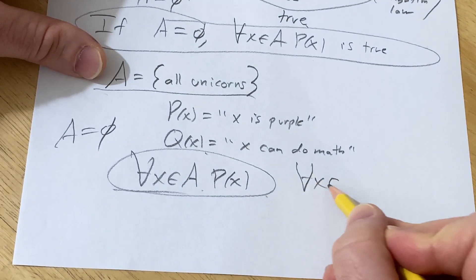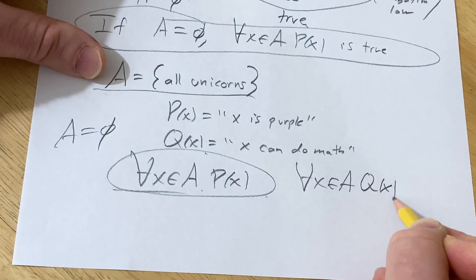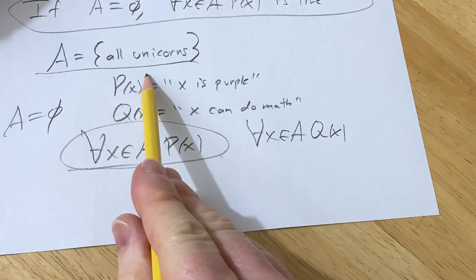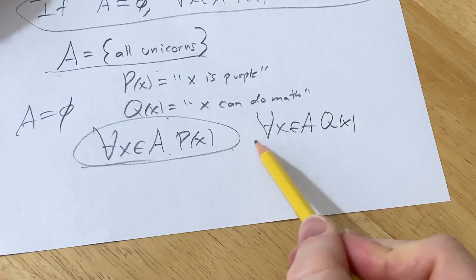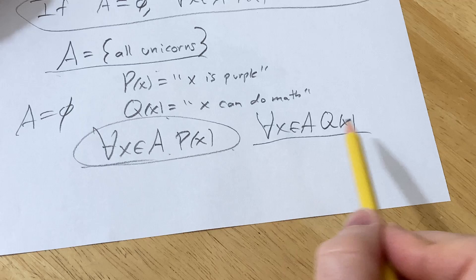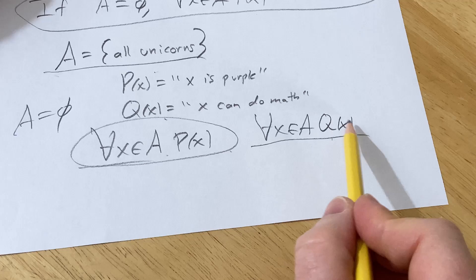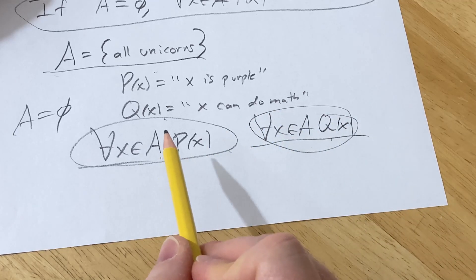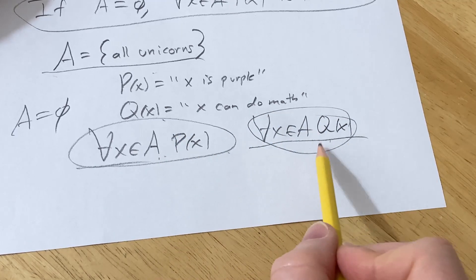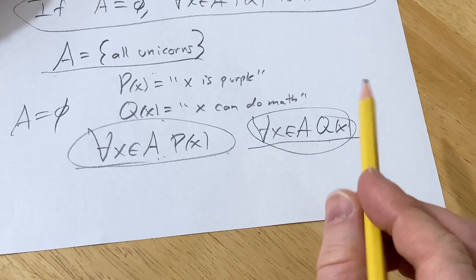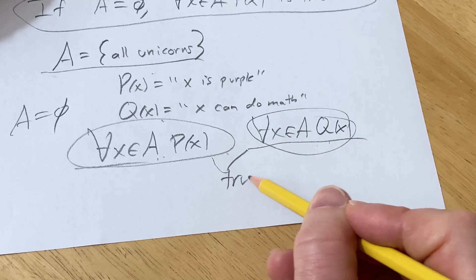Same thing here. If I write for all X in A, Q(X), same thing, right? Unicorns don't exist. So A is the empty set. So for all X in A, Q(X) is true. So that means that all unicorns can do math. So this statement says that all unicorns are purple. And this one says that all unicorns can do math. And both of these are true mathematically by what we investigated here.